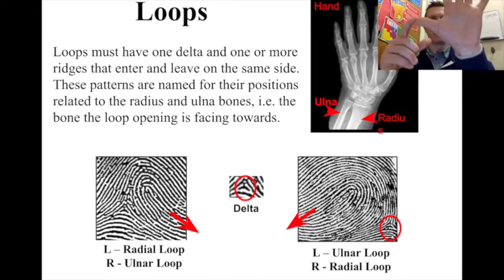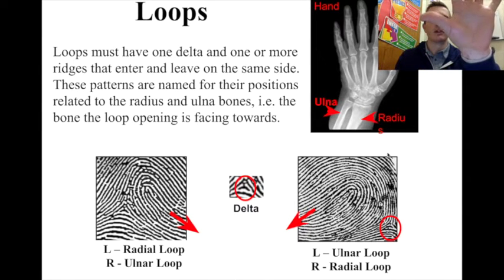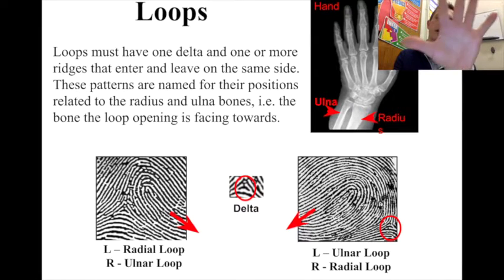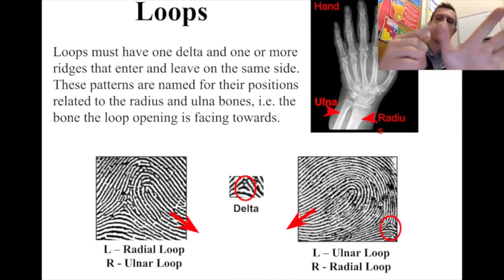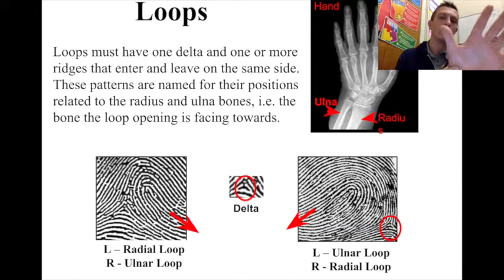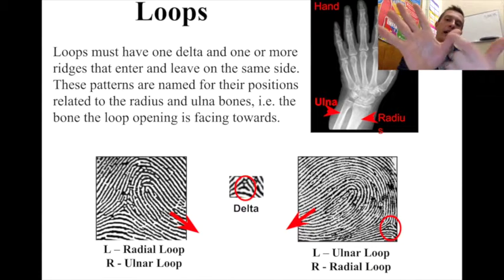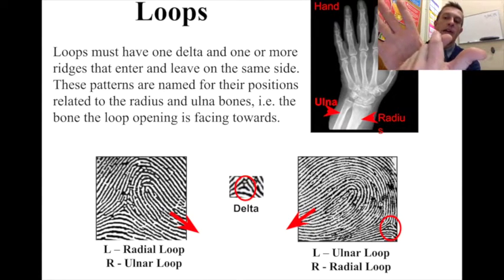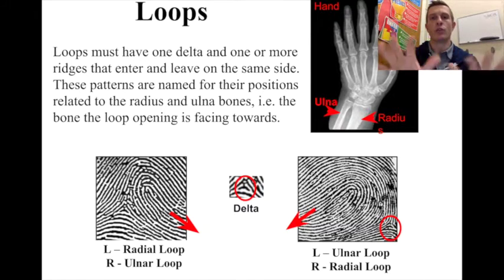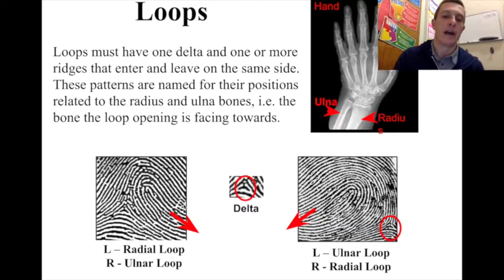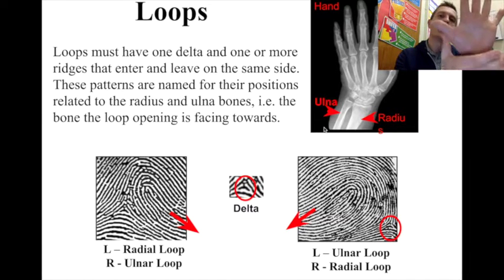Here's my hand and here's my thumb. Your thumb is attached to your radius — the radius is the bone that attaches to the thumb, and I always remember that the radius rotates. So if I had a fingerprint entering on the right side of my left hand and exiting on the same side, going towards my thumb, it would be a radial loop. On my right hand, the radius is on the other side, so a loop entering on the right side of my right hand would be going towards the ulna, making it an ulnar loop. When looking at loops, look at the delta, see which way the arch is coming in and leaving, and orient yourself based on the location of your radius, which goes to the thumb and rotates.